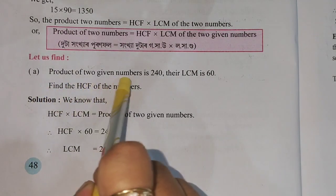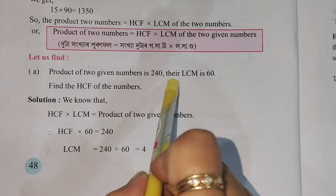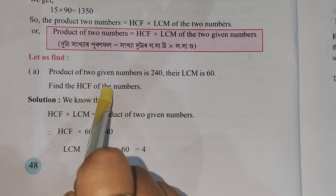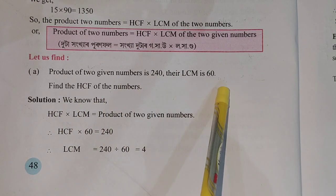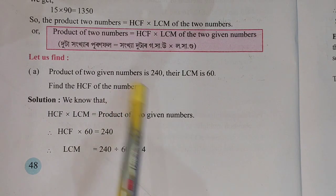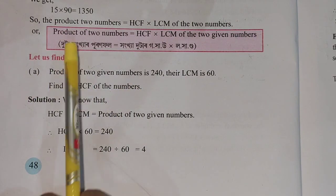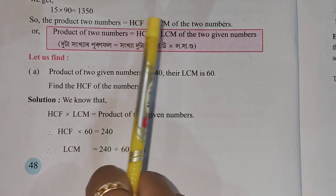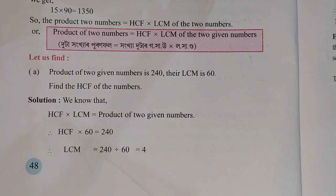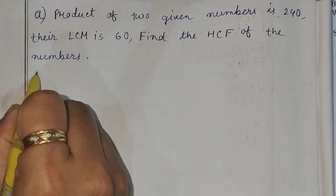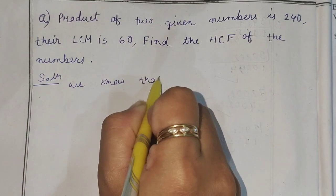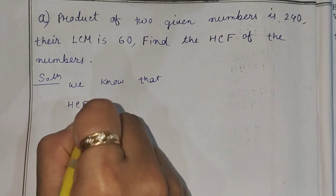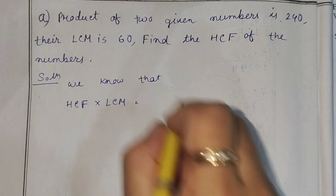The two given numbers have a product of 240 and their LCM is 60. Find the HCF of the numbers. So we know that LCM into HCF is equal to the product of two numbers.